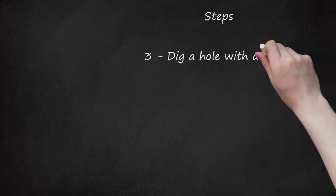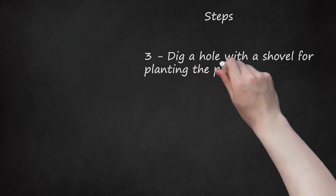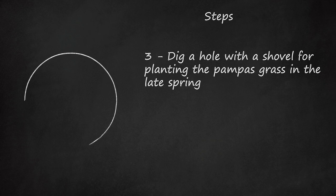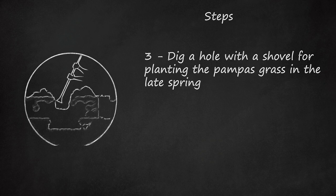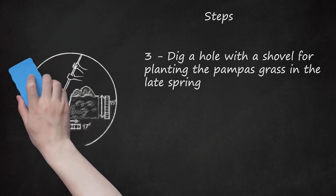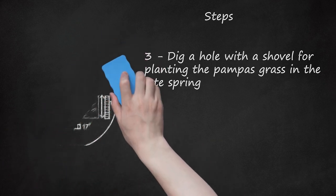3. Dig a hole with a shovel for planting the pampas grass in the late spring. The hole should be around 15 inches (38 centimeters) deep and about 17 inches (43 centimeters) wide for planting a gallon container of pampas grass. Place holes at least 6 feet (1.8 meters) apart if planting multiple clumps of pampas grass.